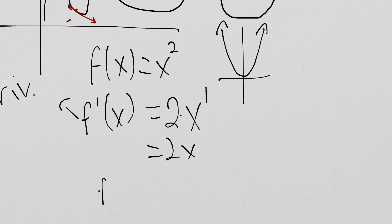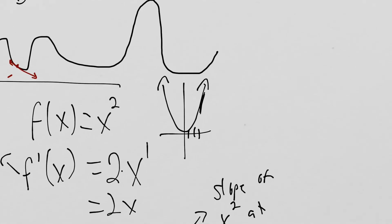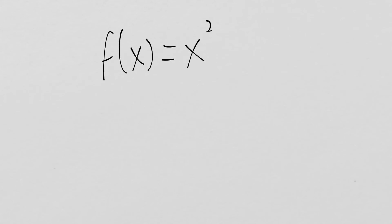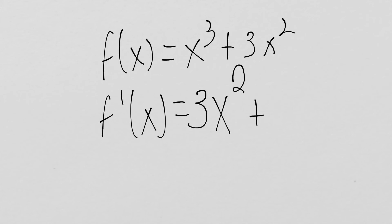So the slope of x squared at x equals 3 is 2 times 3, which is 6. For another example of the power rule: f of x equals x cubed plus 3x squared. The derivative f prime of x — we take the coefficient times the exponent for x cubed: 3 times 1 gives 3x squared. Then for 3x squared: 2 times 3 gives 6x to the first. So the final derivative is f prime of x equals 3x squared plus 6x.